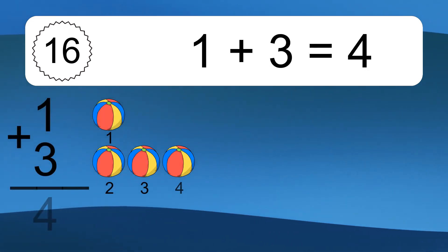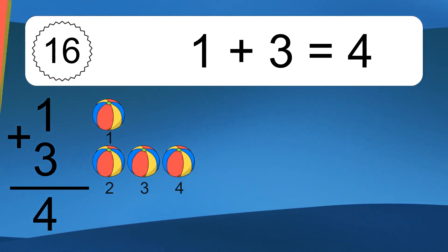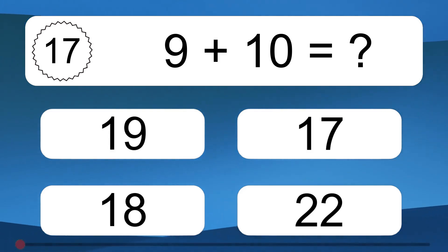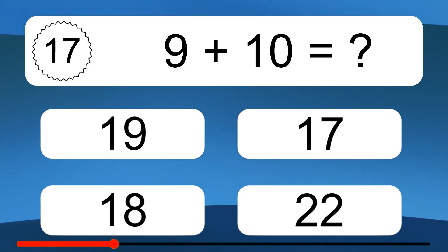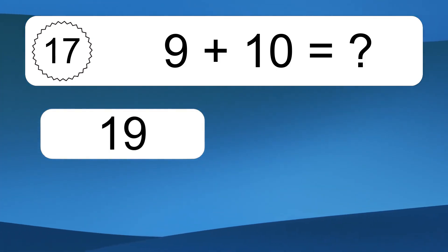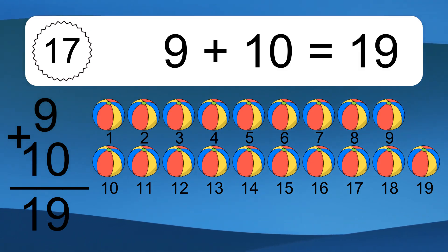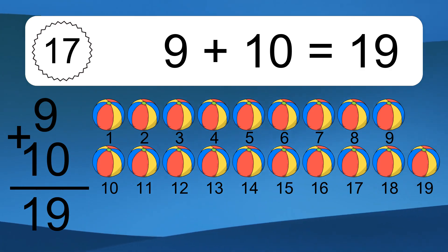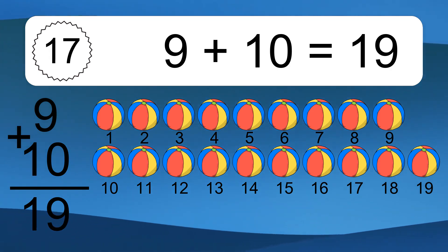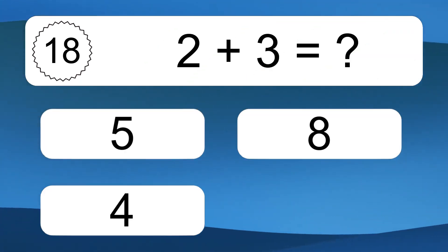1 plus 3 equals 4. Let's count it. 1, 2, 3, 4. 9 plus 10 equals what? 9 plus 10 equals 19. Let's count it. 1, 2, 3, 4, 5, 6, 7, 8, 9, 10, 11, 12, 13, 14, 15, 16, 17, 18, 19. 2 plus 3 equals what?